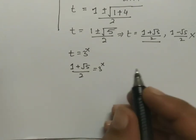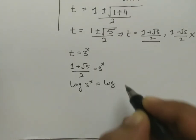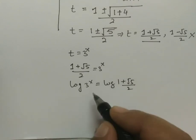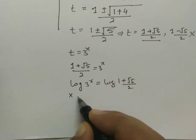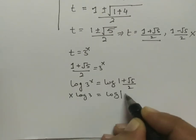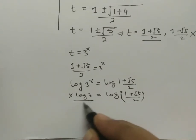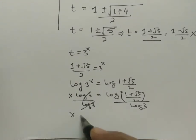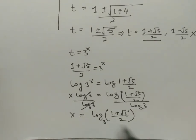Taking log on both sides: log(3^x) = log((1 + √5) / 2). Using the log power rule: x·log(3) = log((1 + √5) / 2). Dividing both sides by log(3), the final solution is x = log base 3 of ((1 + √5) / 2). Thank you guys.